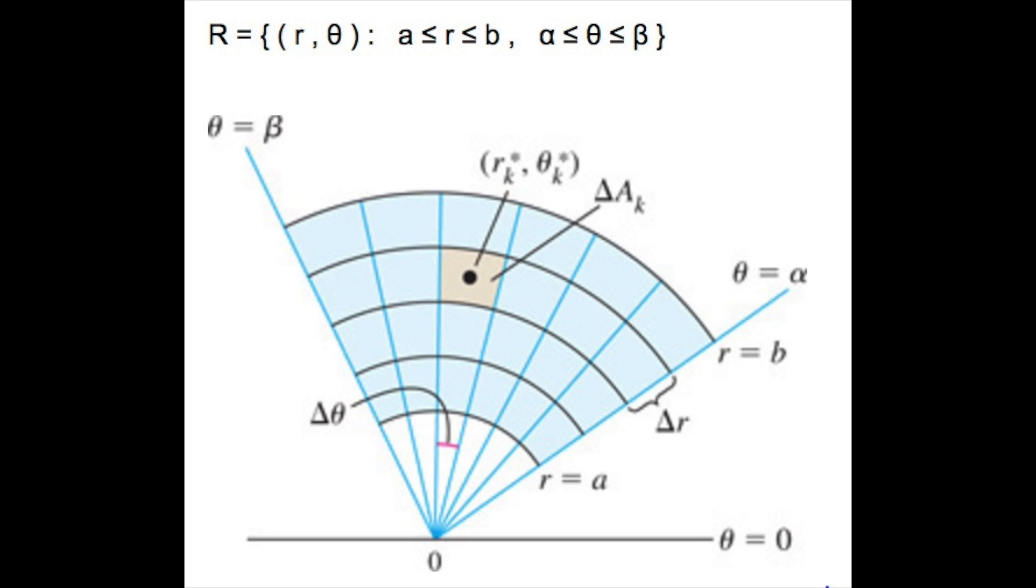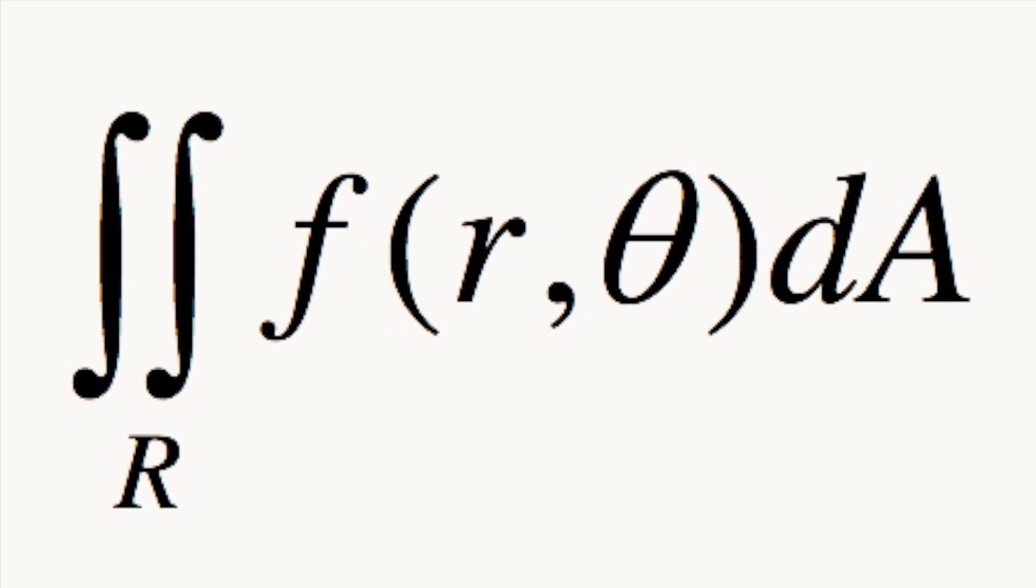Therefore, the volume of the solid region beneath the surface z equals f of r and theta is approximately v equals the summation from k equals 1 to n of that volume. Based on this information, we can conclude that the double integral of the function f of r and theta with respect to r dr dθ equals the volume of the solid for polar regions.